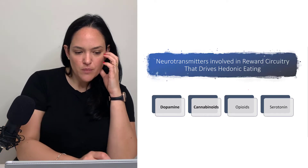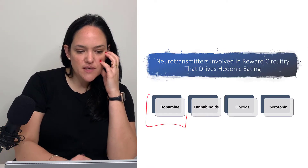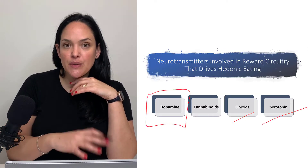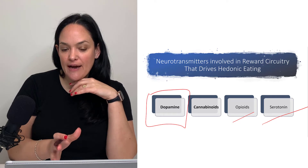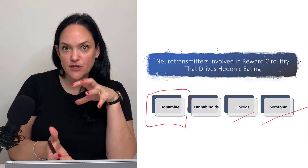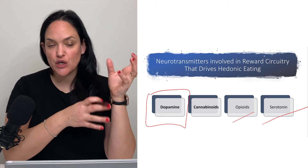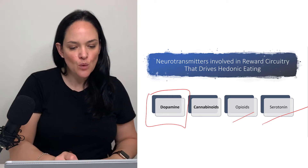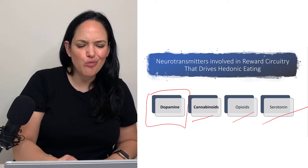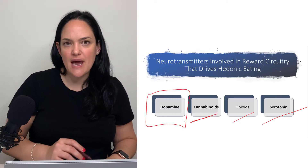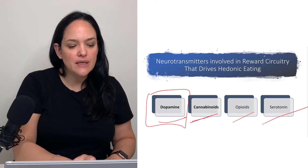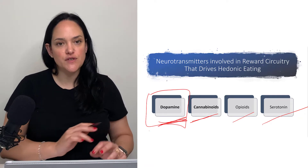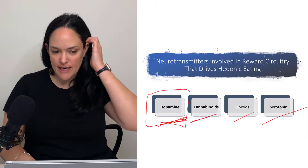Our main focus is going to be on dopamine, although opioids and serotonin also have implications for the reward circuitry that drives hedonic eating. We'll talk briefly about cannabinoids as well, but really we're going to focus our conversation on dopamine.